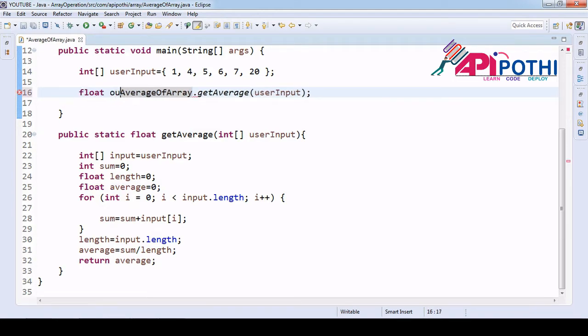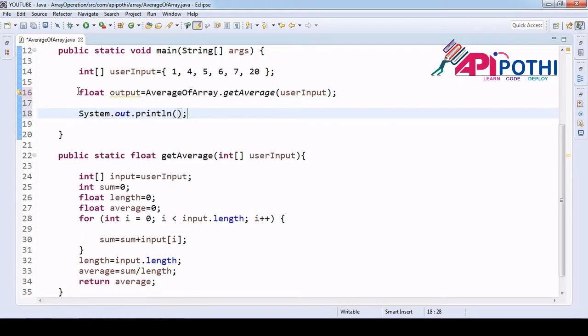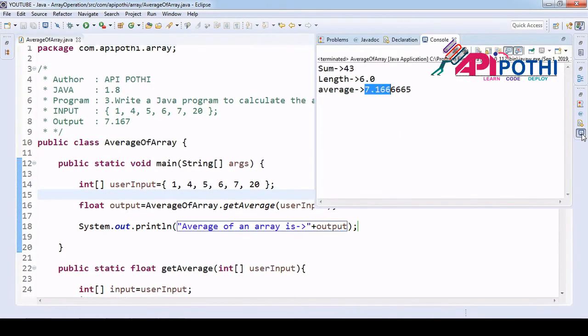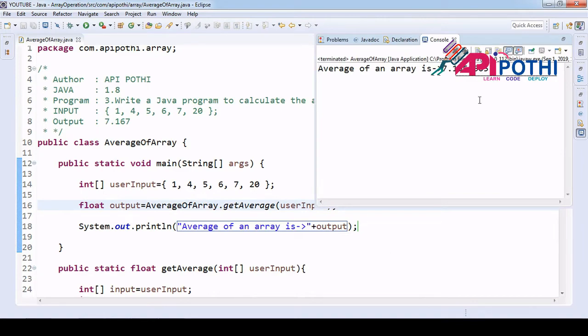Now since we are returning as a float type, we can assign the return of this value in float only. Float output. Average of an array is average output. Let's check this now. Right click, run Java application. You are getting value 7.1666.